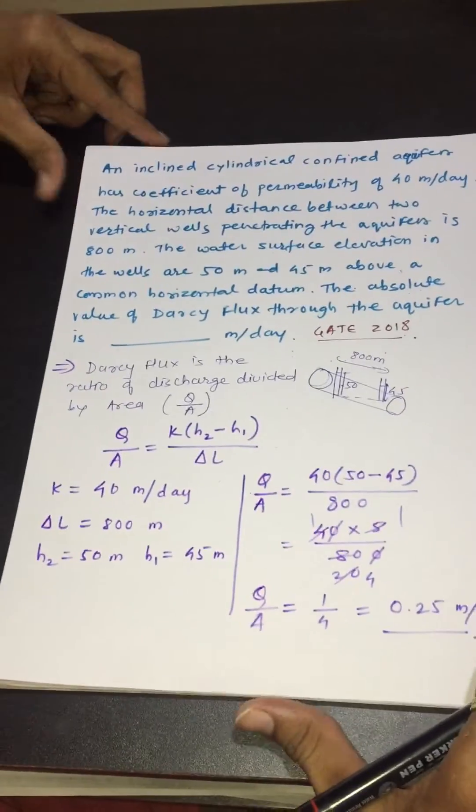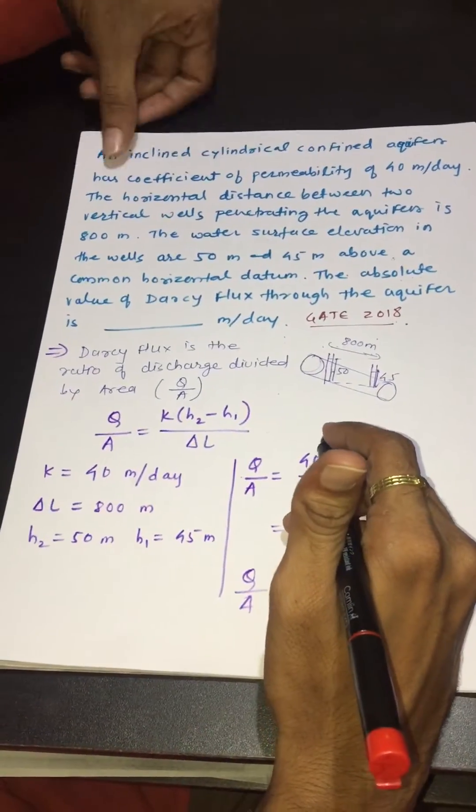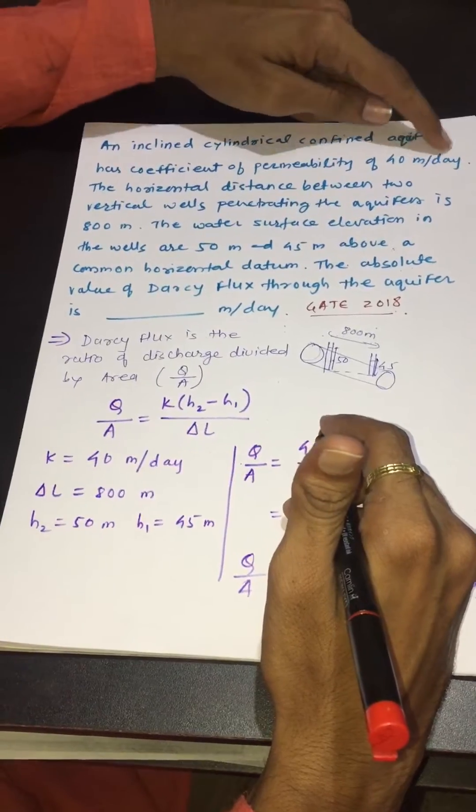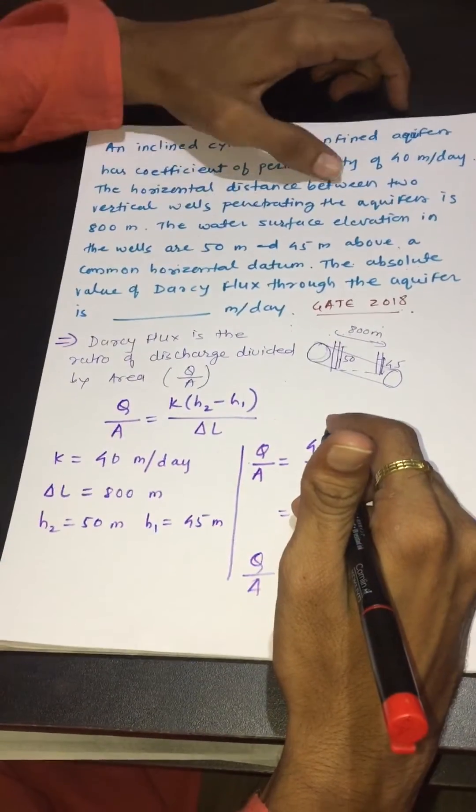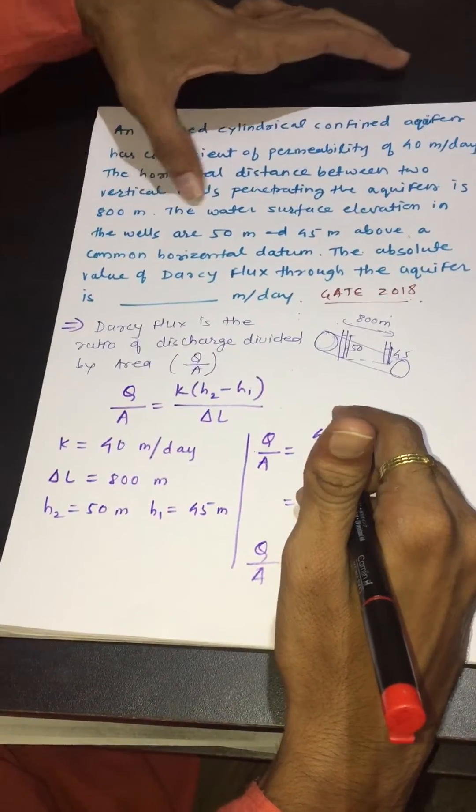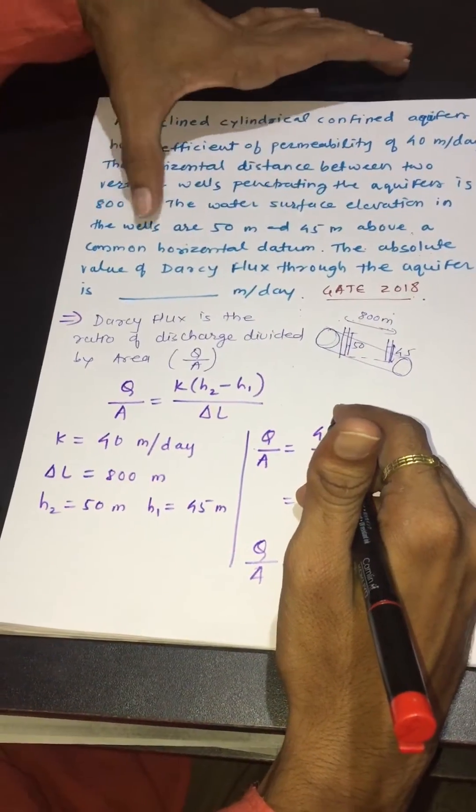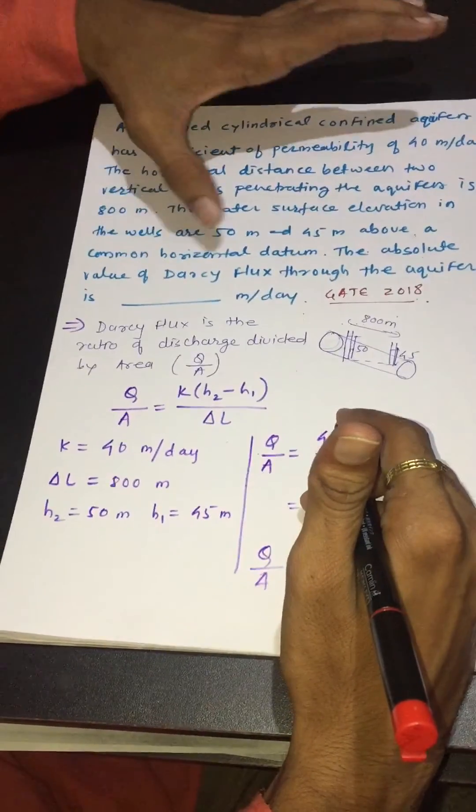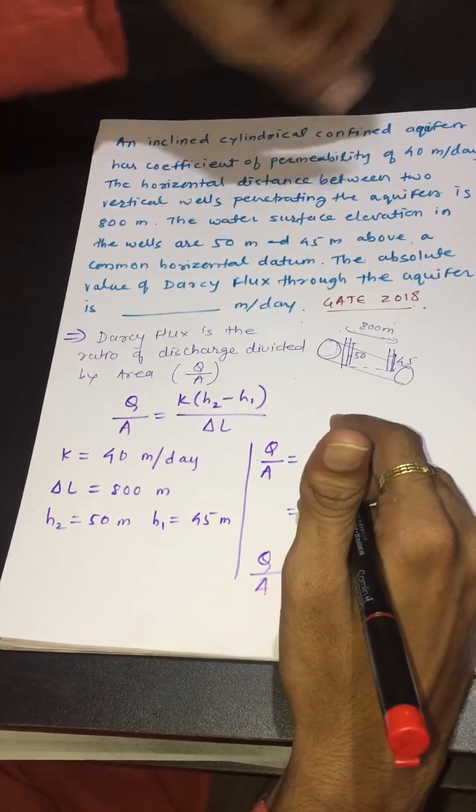An inclined cylindrical confined aquifer has coefficient of permeability of 40 meter per day. The horizontal distance between two vertical wells penetrating the aquifer is 800 meter. The water surface elevation in the wells are 50 meter and 45 meter above a common horizontal datum.